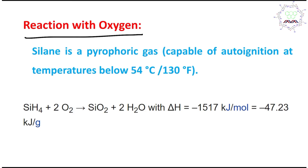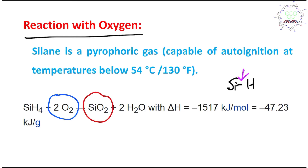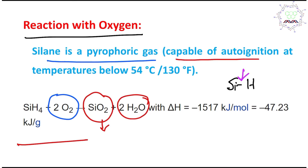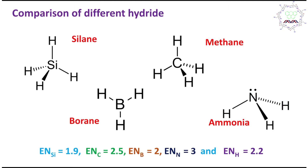Now, let's discuss silane's reaction with oxygen. The Si–H bond is not very stable because silicon is a third-row element and hydrogen is first-row, so orbital overlap is poor. Silane reacts with oxygen in an exothermic reaction to ultimately produce the very stable molecules silica and water — both very stable, so a huge amount of energy is released. That's why silane is a pyrophoric gas — capable of auto-ignition at temperatures below 54°C. These pyrophoric materials must be handled in the laboratory very carefully under proper inert conditions, as they catch fire automatically upon exposure to oxygen.